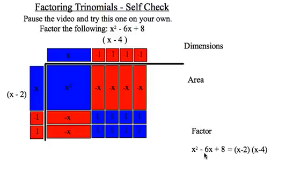So that means that x² - 6x + 8, when it's factored, becomes (x - 2) times (x - 4).